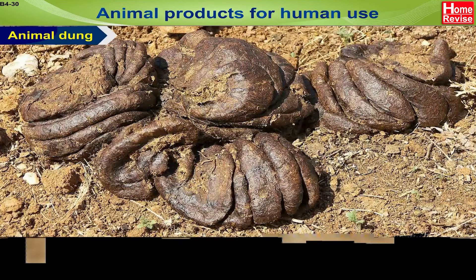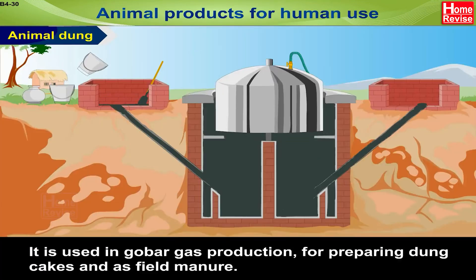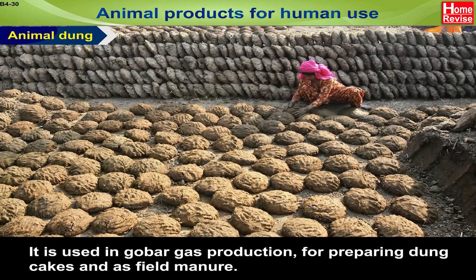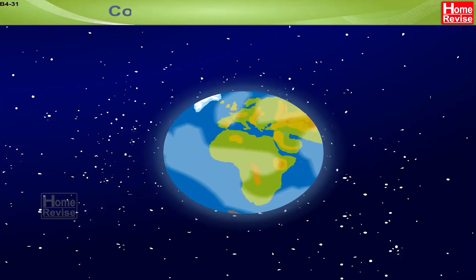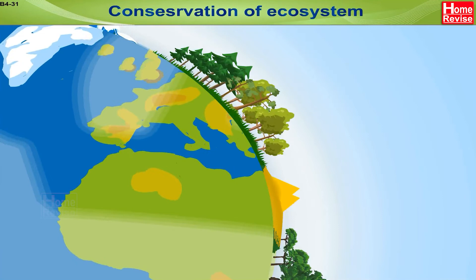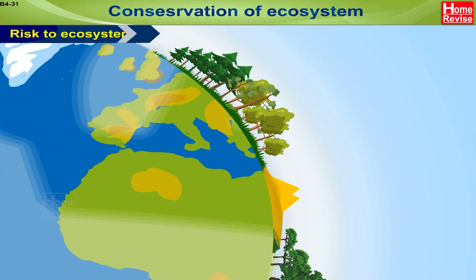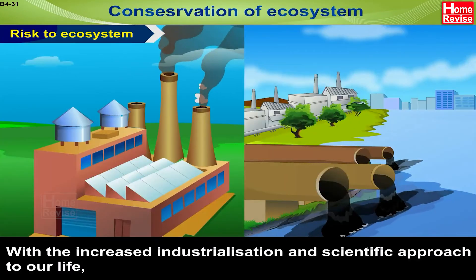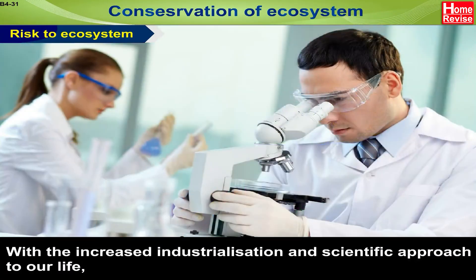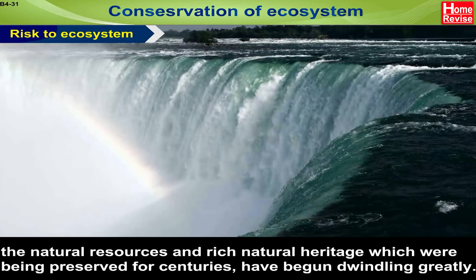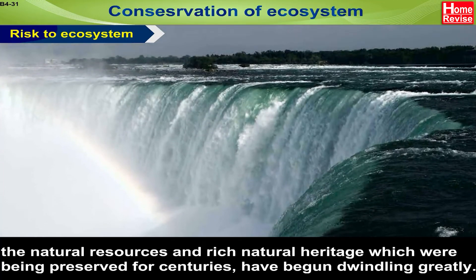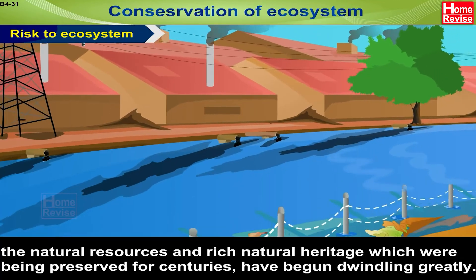Animal dung is used in gobar gas production, for preparing dung cakes, and as field manure. Conservation of Ecosystem. Risk to ecosystem: With increased industrialization and scientific approach to our life, the natural resources and rich natural heritage, which were being preserved for centuries, have begun dwindling greatly.